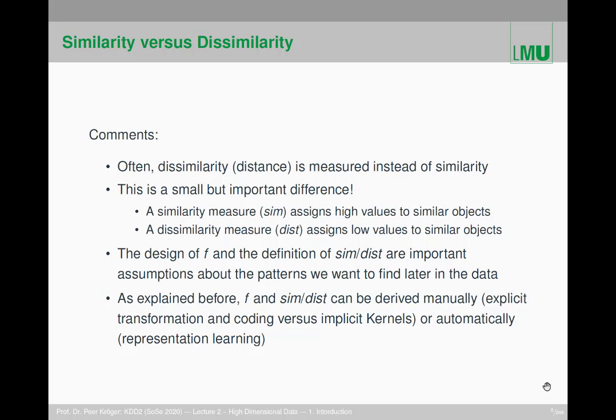Instead of a similarity measure, very often a dissimilarity measure is used. A dissimilarity measure is a distance measure. This is a potentially small but very important difference, because a similarity measure is the opposite of a distance measure. A similarity measure assigns high values to similar objects, while a distance function assigns low values to similar objects.